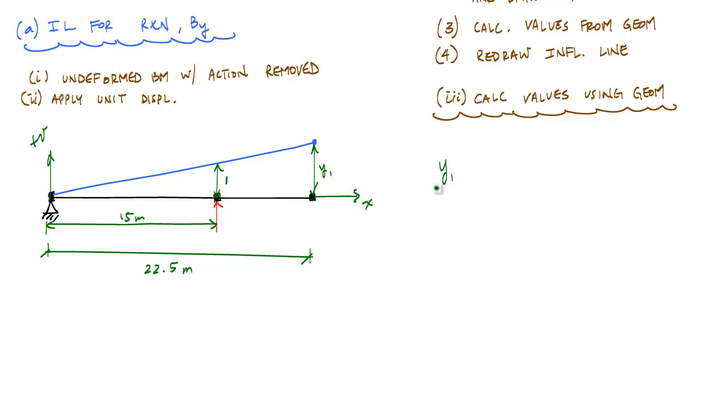By similar triangles, we could say y1 over 22.5 equals 1 over 15. Notice that the units of meters cancel out, so y1 is 22.5 over 15, which is 1.5.